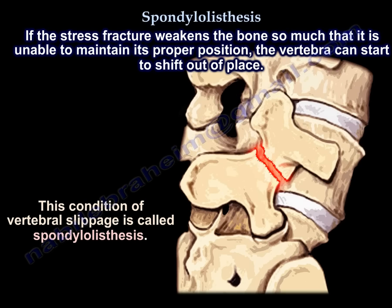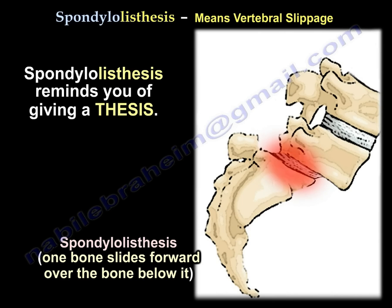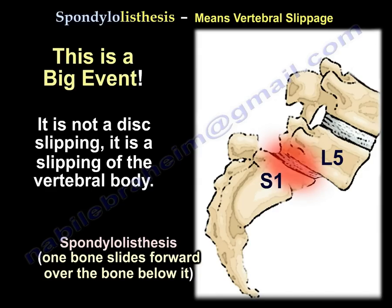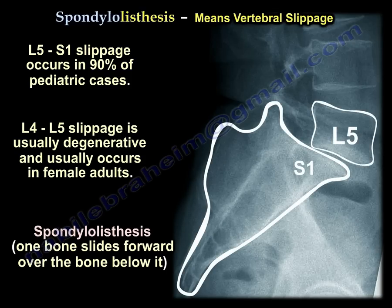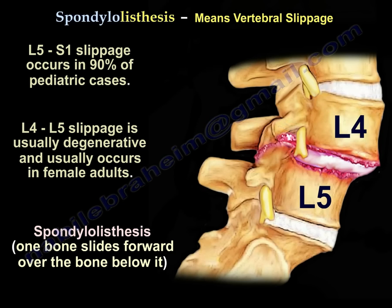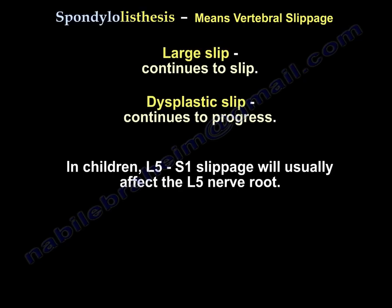Spondylolisthesis — thesis means slippage. It is a slippage of the vertebral body, not a slippage of the disc; one vertebral body slips forward over the other. It usually occurs at L5-S1 in the pediatric population and at L4-L5 in adult females. In adults, slippage rarely exceeds 30% and usually affects the L5 nerve root. About 15% of patients with a pars defect will progress to forward slippage. A large slip or dysplastic slip will continue to progress. In children, an L5-S1 slip will usually affect the L5 nerve root.